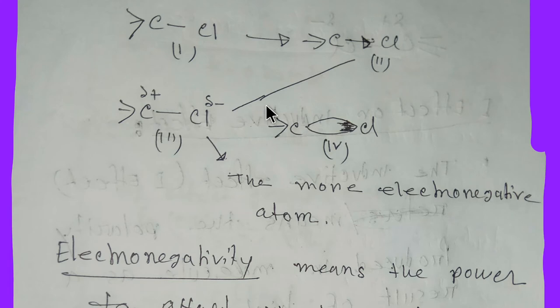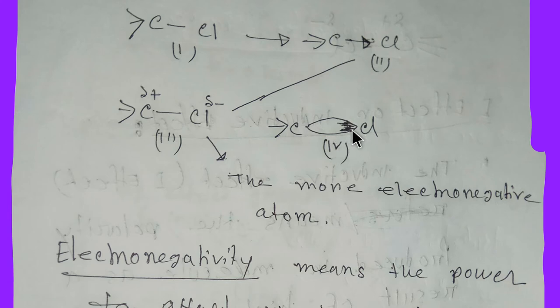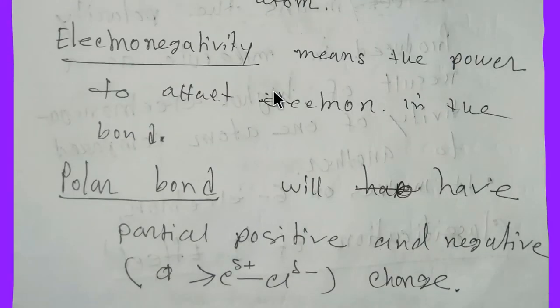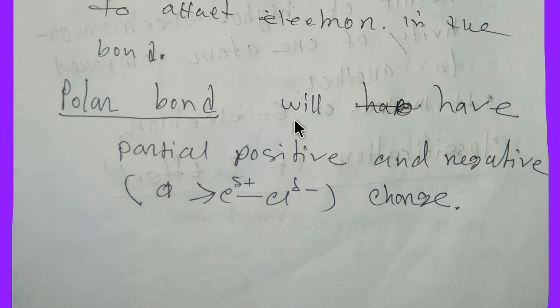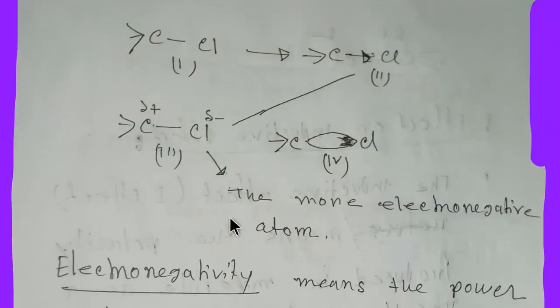If you show this bond like this — this is the orbital, or you can say bond orbital — the electron wave is very close to chlorine. So what will happen here is chlorine will be partially negative and carbon will be partially positive. This is a polar bond. A polar bond will have a partial positive and partial negative charge.